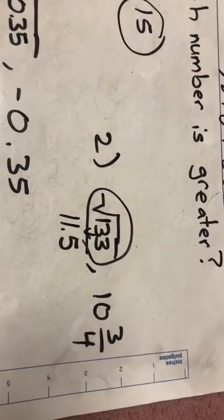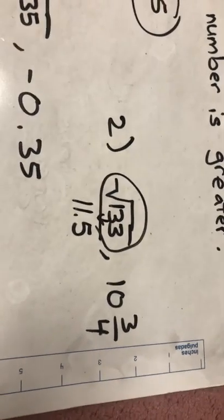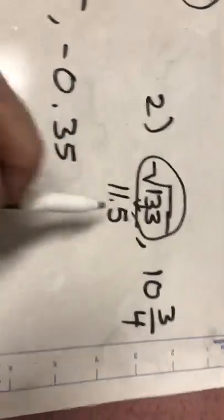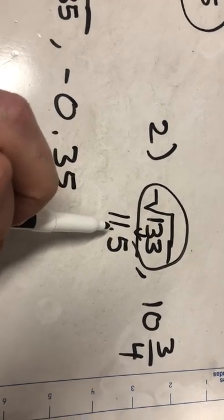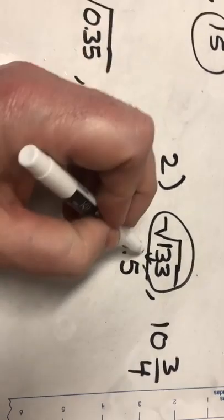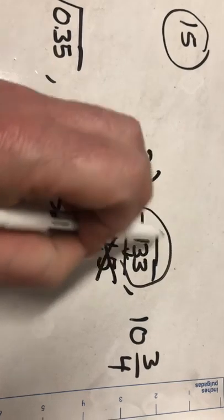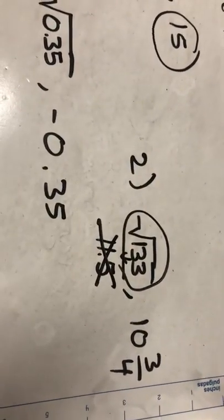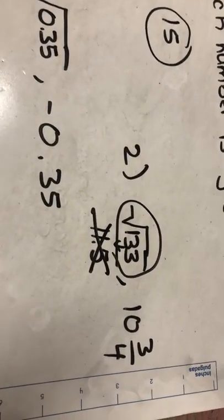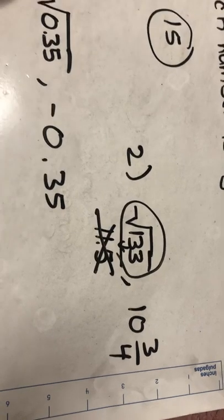Do make sure on your paper, seventh graders, that you put the original number. Even though you punch this into your calculator and you get 11.5, it's not 11.5. I want to see on your paper you would need to write down the square root of 133, whatever the original problem is that the paper gives you.